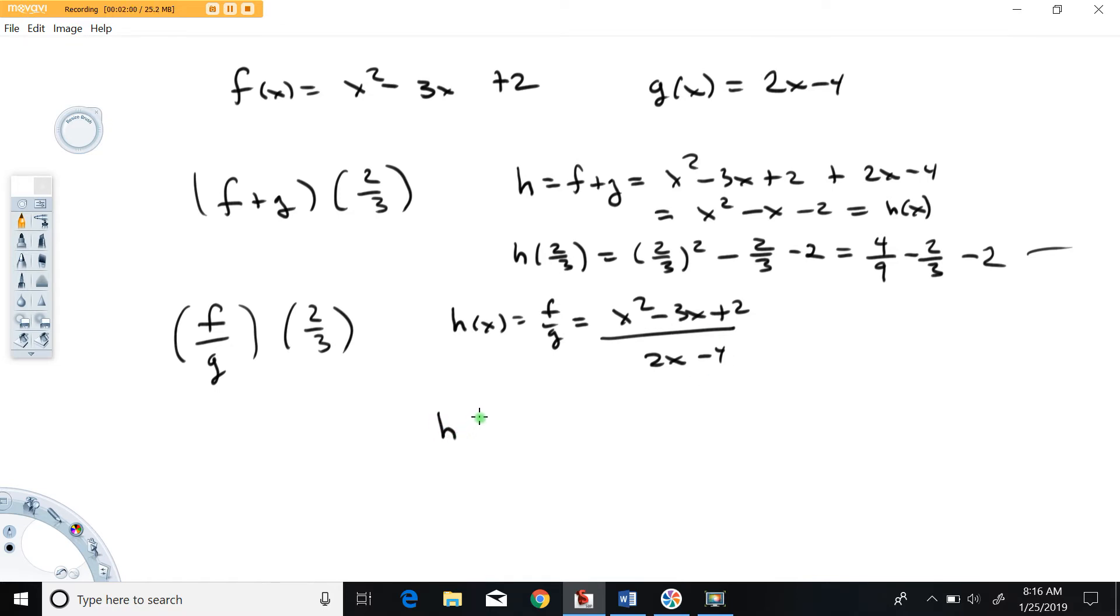All right, so now we're going to try to calculate h of two-thirds, and that means take two-thirds and put it in for x everywhere. So we're going to have two-thirds squared minus three times two-thirds plus two in the top, and two times two-thirds minus four in the bottom. And I'm going to leave simplifying this as an exercise to the viewer.